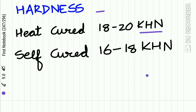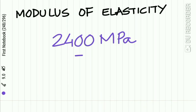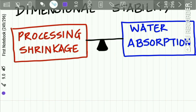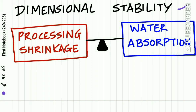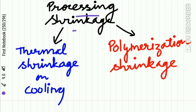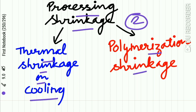The Knoop hardness number of heat-cured resin is 18–20, while that of self-cured resin is 16–18. The modulus of elasticity is 2400 MPa. Regarding dimensional stability, a well-processed denture has good dimensional stability, which is a balance between processing shrinkage and water absorption. Processing shrinkage occurs due to two reasons: first, thermal shrinkage occurring on cooling, and second, polymerization shrinkage.